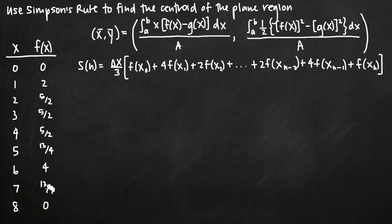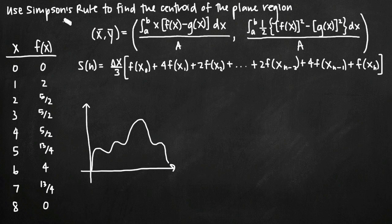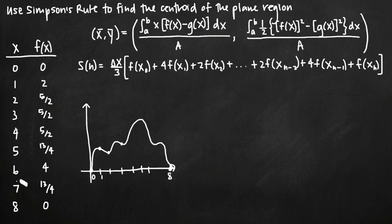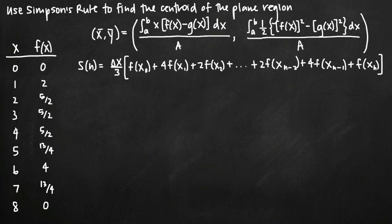You could just as easily do the same problem if you were given a graph on an xy coordinate plane. They're probably going to give you the range, but if they don't, use the x-intercepts and call that your range — so if this is 0 and this is 8. Then figure out the value on the graph at x=1, x=2, x=3, etc. Put those into your table and you have values to plug into your Simpson's rule approximation formula.